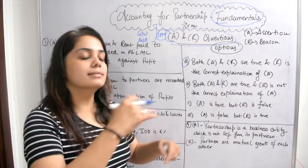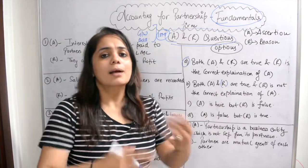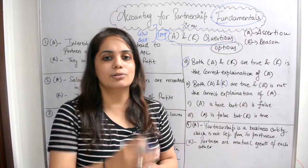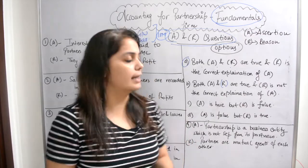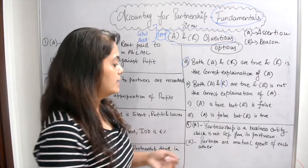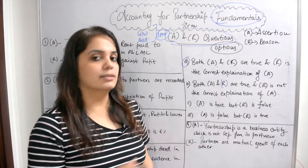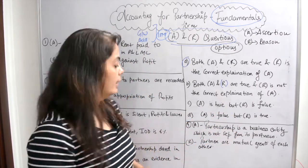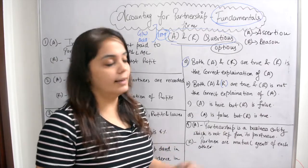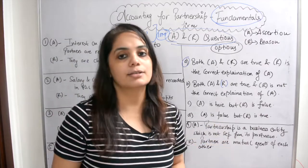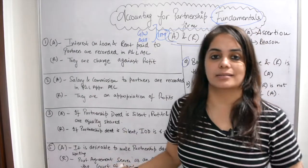This means both assertion and reason are individually correct, but they are not related to each other. Option three: A is true but R is false — assertion is correct but the reason is wrong. Option four: assertion is false but R is true. So let's get started with the first question.